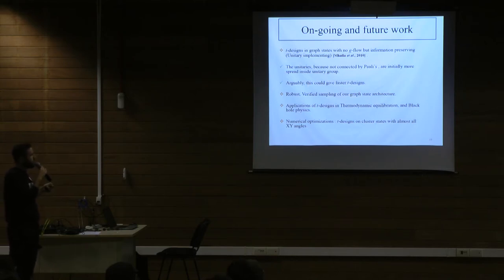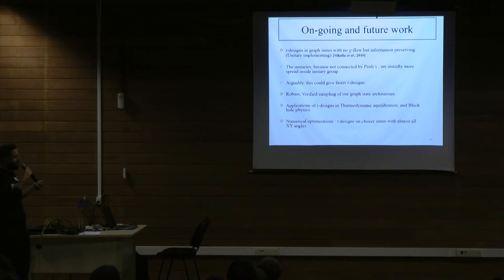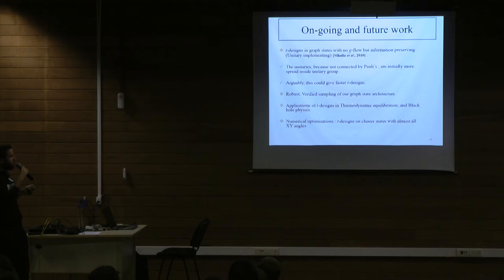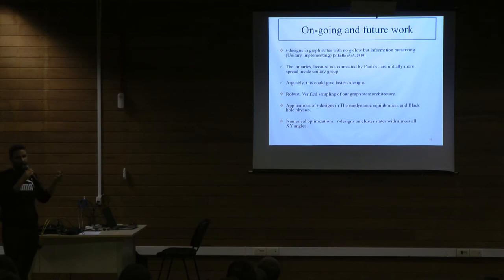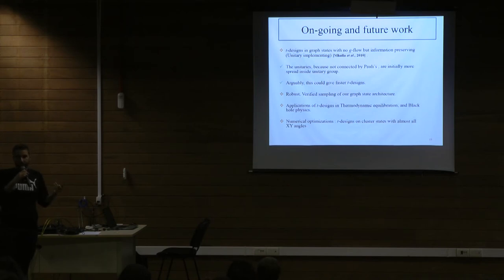The second future direction is robust verified sampling of our graph state architecture. Because this is an IQP, and for a particular noise model, there's a paper by Ashley Montanaro showing that using a bigger IQP you can account for a constant amount of noise applied to each output qubit. I would also like to look at applications of T-designs in thermodynamic equilibration and in black holes. Finally, I want to ask whether the three angle choices — zero, pi/4, pi/2 — are necessary or the only necessary choices. I believe that because most unitaries are universal for quantum computing, almost all XY angles should work.